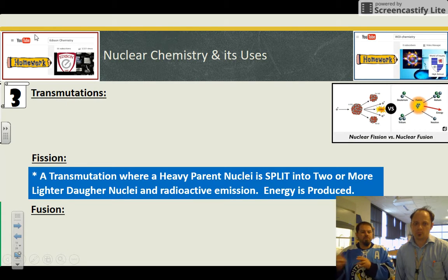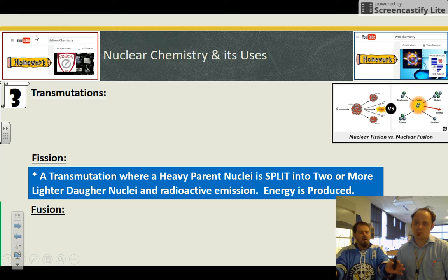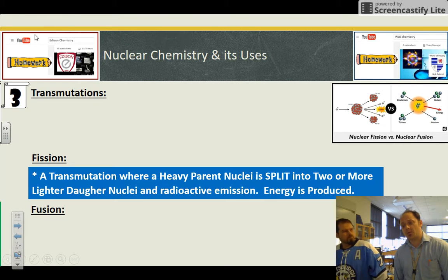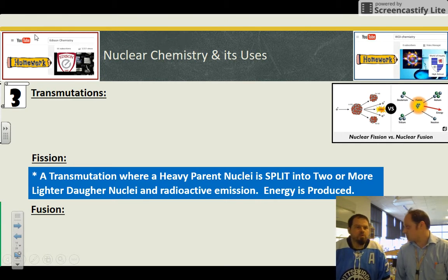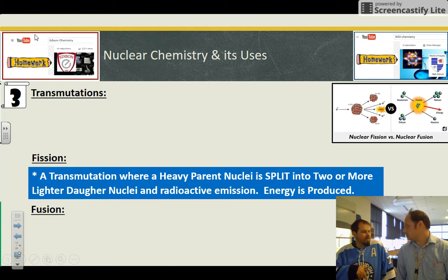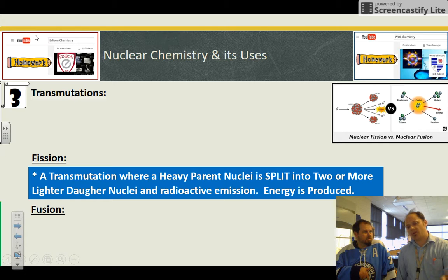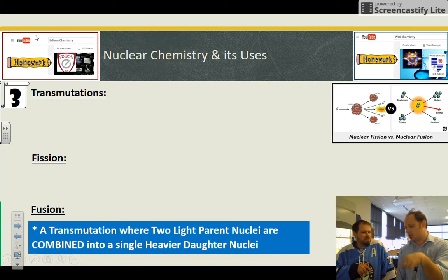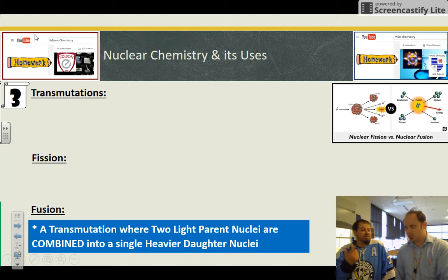There are two daughter nuclei that are smaller. Another really important thing about fission is that energy is produced. This is the only thing we can do on the planet, right? We can't do fusion. We have done fusion for like billionths of a second, but it's not sustainable. It doesn't continue.